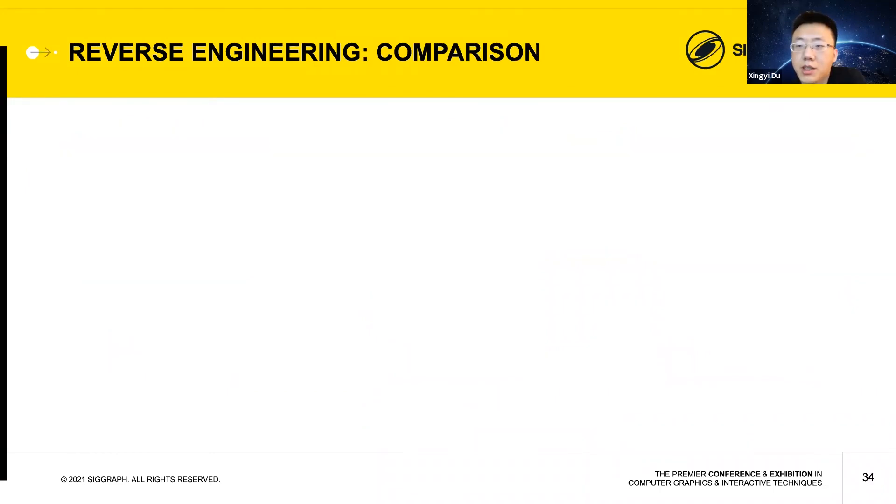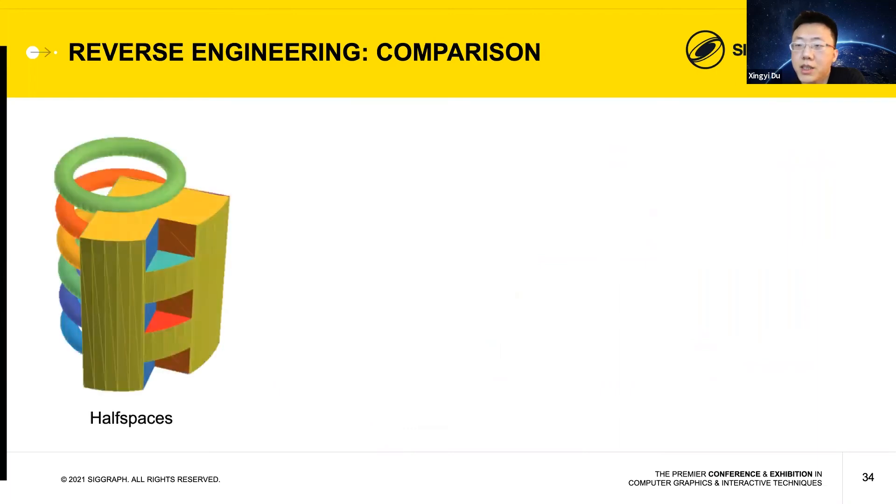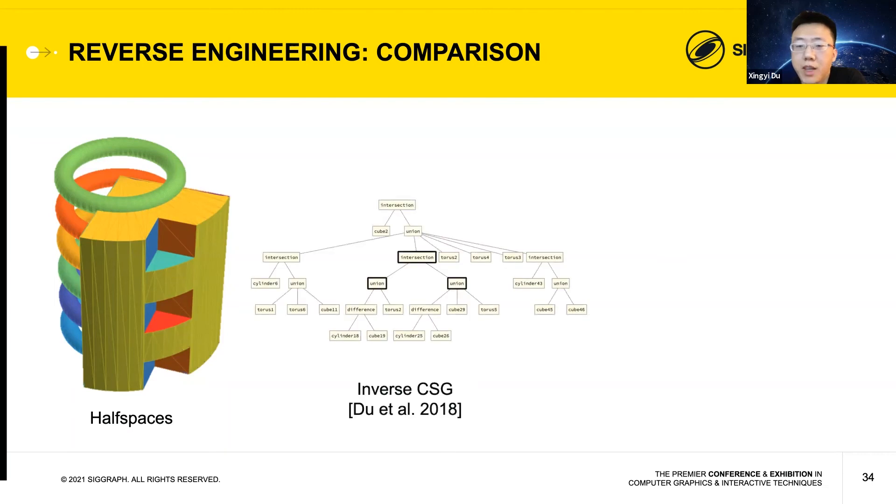Here we compare the result of reverse engineering for CSG and BSH, starting from the same set of half spaces as shown on the left. This input consists of six tori, ten planes, and one cylinder. Although this example can be obtained by a relatively simple sequence of boolean operations, applying a state-of-the-art algorithm for reverse CSG on this input produced a complex boolean expression tree. Many of the operations in this expression are rather counter-intuitive, such as the highlighted operation, which is an intersection of the two components. It's difficult to imagine how a modeler could use this output to continue editing the shape, such as adding or removing parts, and adjusting the spatial relation between parts.